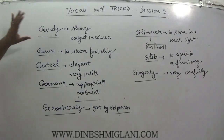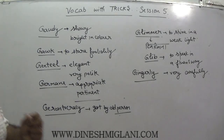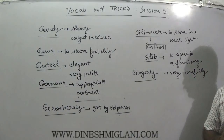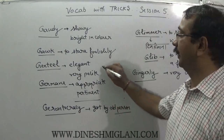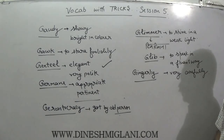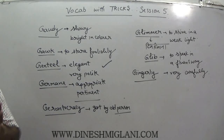Let us revise again. Gaudy — like the decorated 'gaudi' used in weddings, very brightly colored; something which is very showy or bright in color. Gawk, G-A-W-K — staring at a female singer; to stare foolishly on someone. Genteel — close to gentle; a very elegant person, that is genteel. Germane — associated with Germany; Germany's goods are very appropriate and pertinent, so germane means appropriate and pertinent. Gerontocracy — government by old persons.